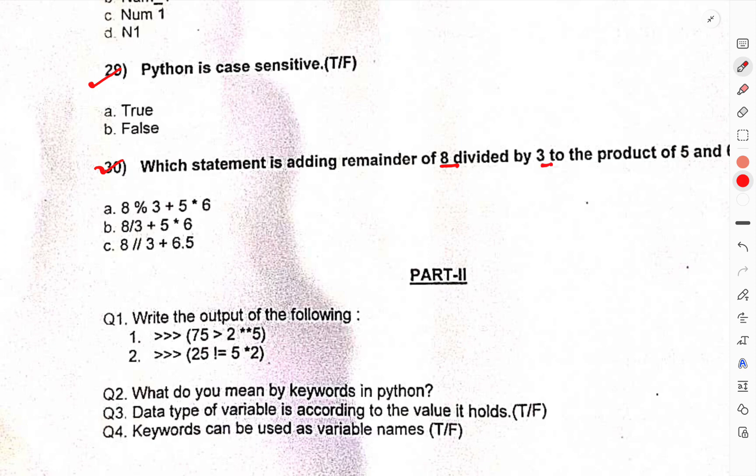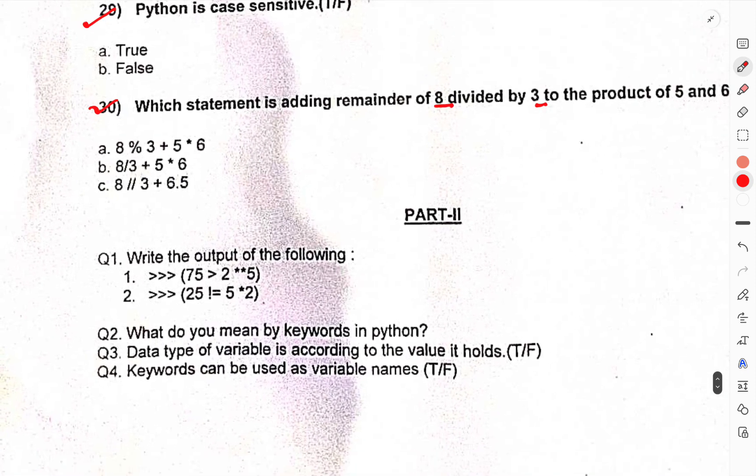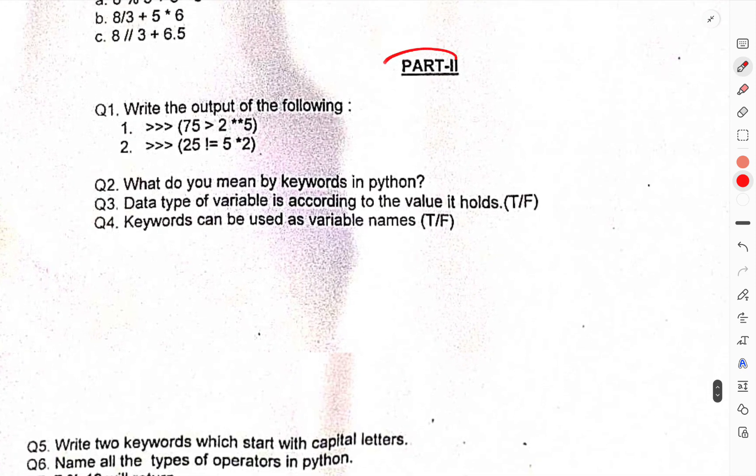Part 2, descriptive based answers. First, write the output of the following. What do you mean by keywords in Python? Data type of a variable depends on the value it holds. Keywords can be used as variable names. Write two keywords which start with capital letters.